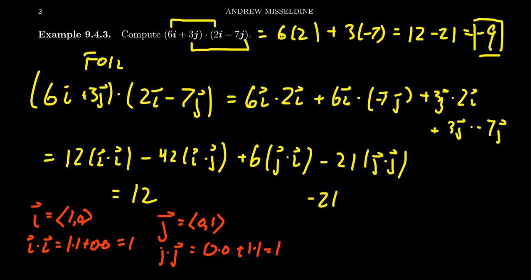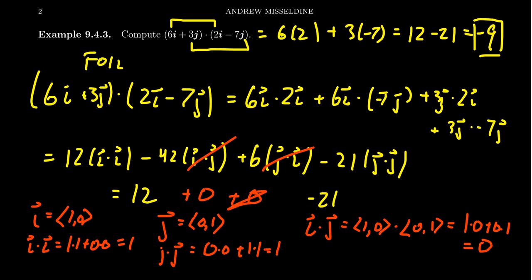What about i dot j? You're going to get (1,0) dot (0,1). That equals 1 times 0 plus 0 times 1. That's just equal to 0. So i dot j just disappears, and this dot product is also commutative. So you see that j dot i is the same thing. So you end up with this 0 and 0. And so these middle terms just disappear, and you end up with the 12 minus 21 that we did before.